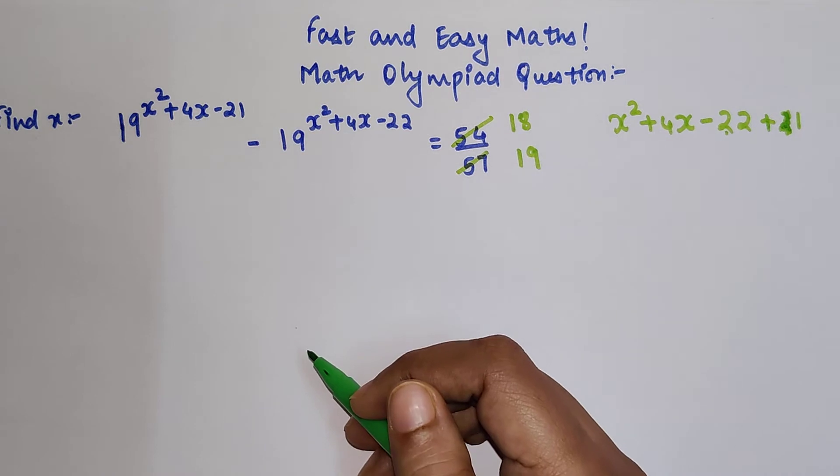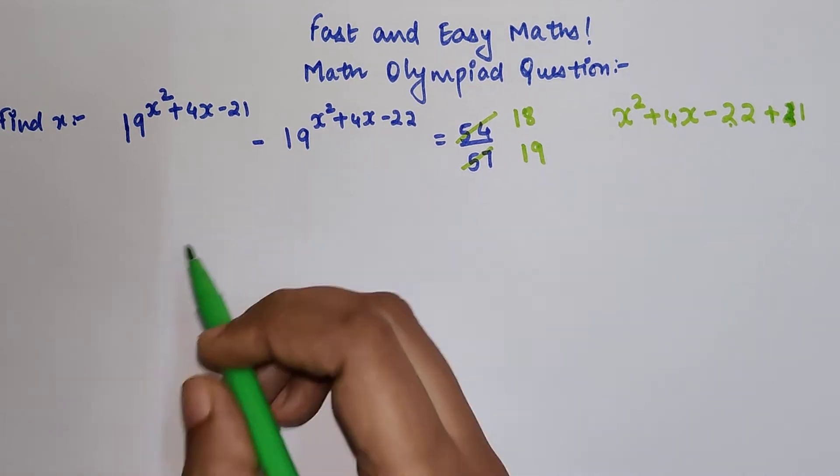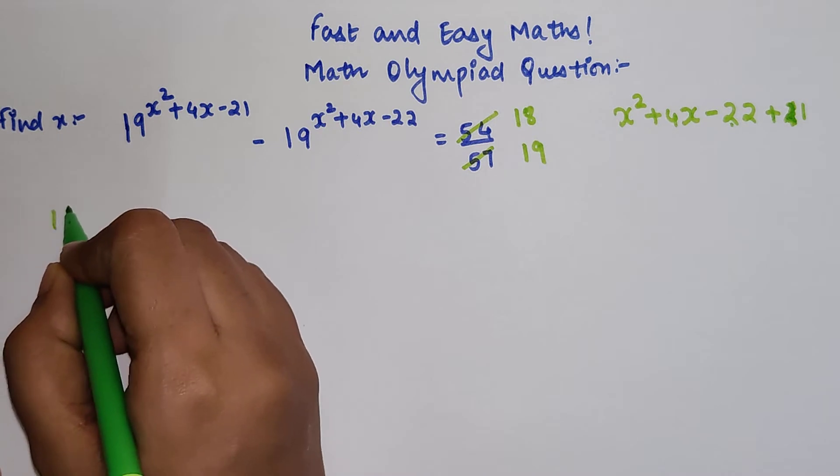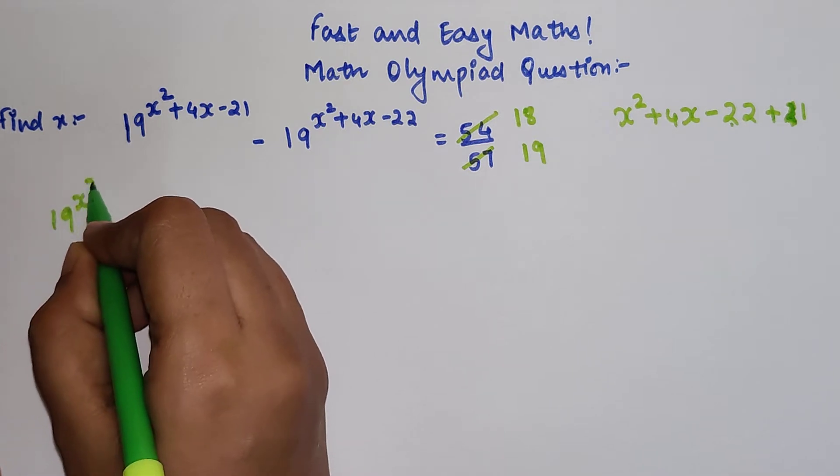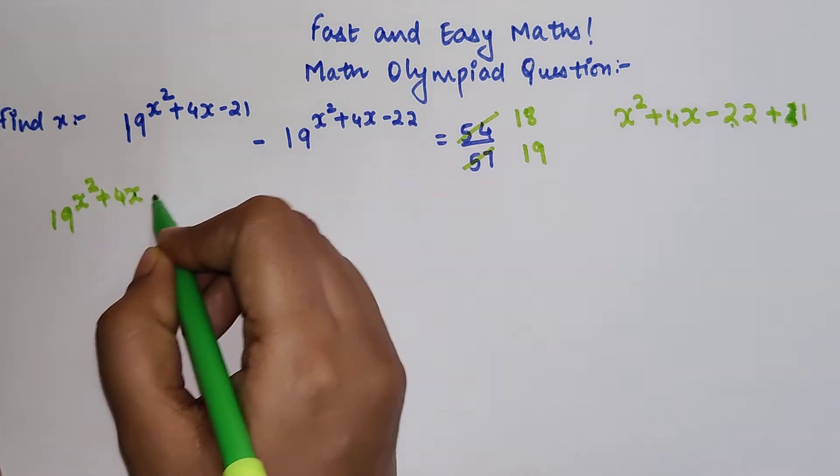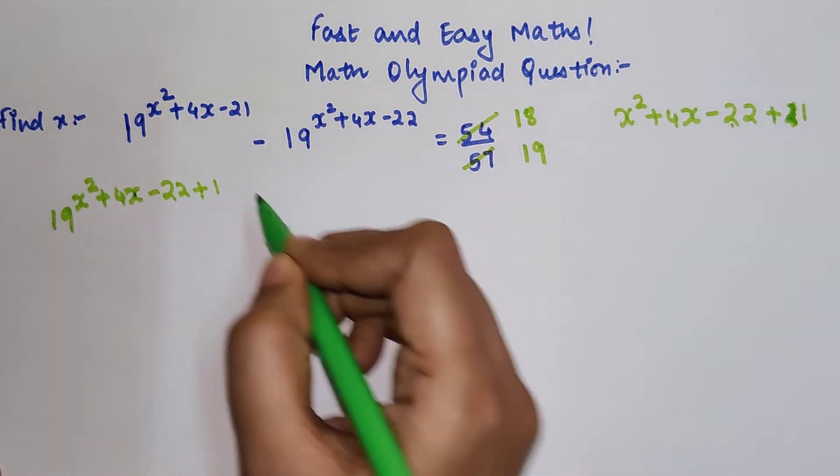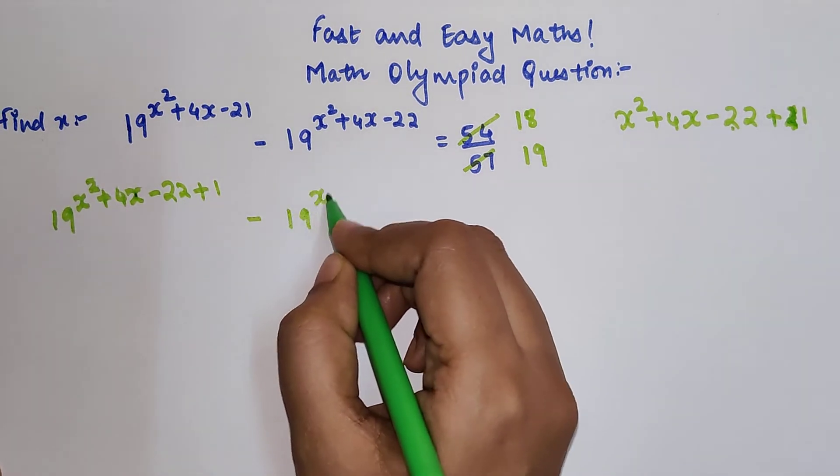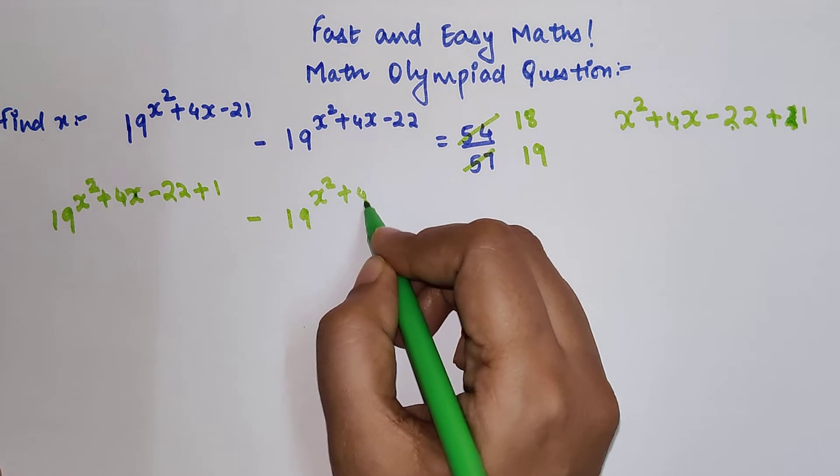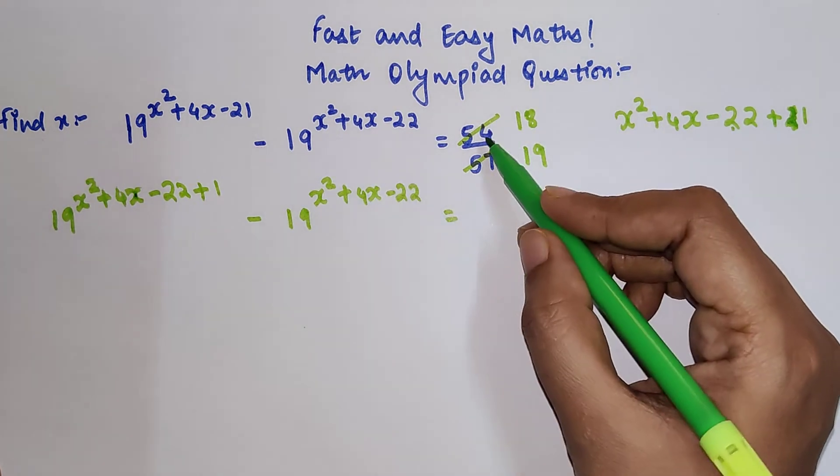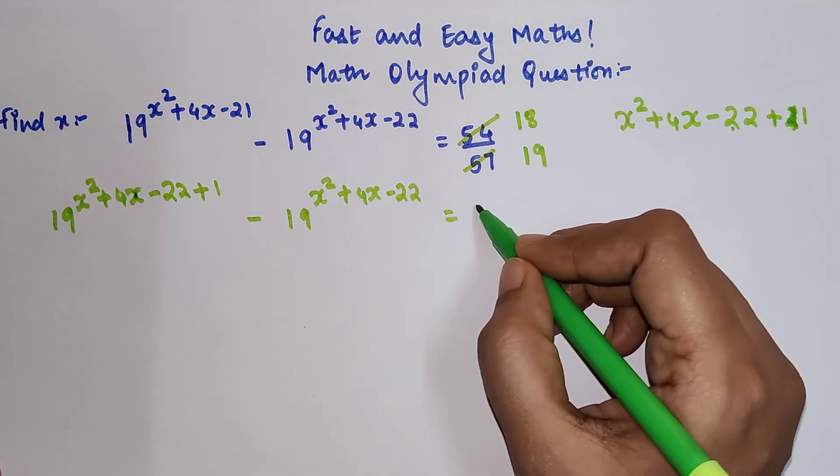Let's quickly write this simplification. We write this as 19^(x²+4x-22+1) - 19^(x²+4x-22) = 18/19, using the reduced form instead of 54/57.